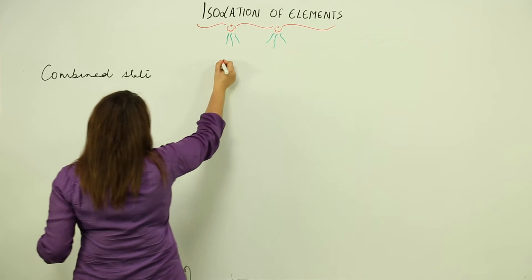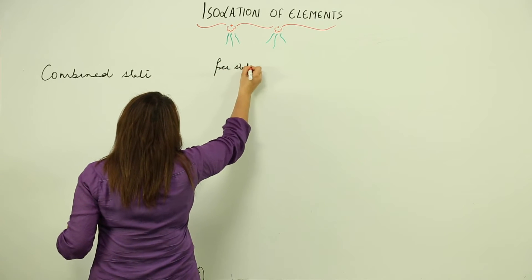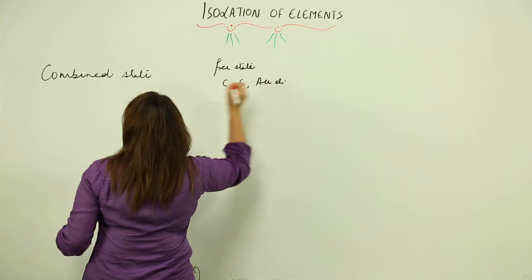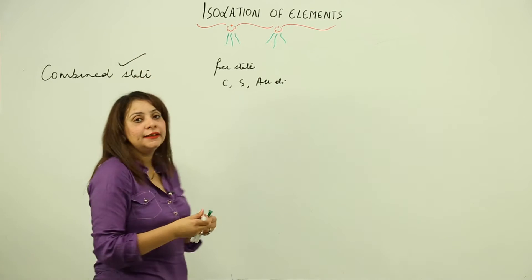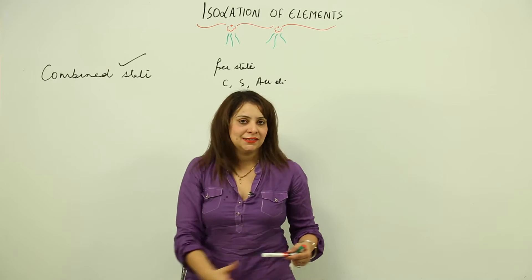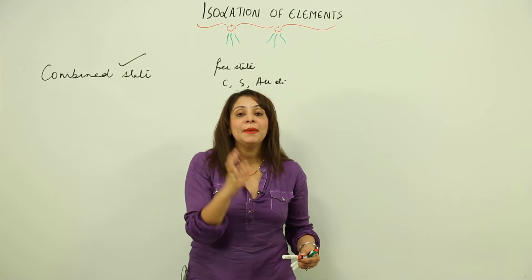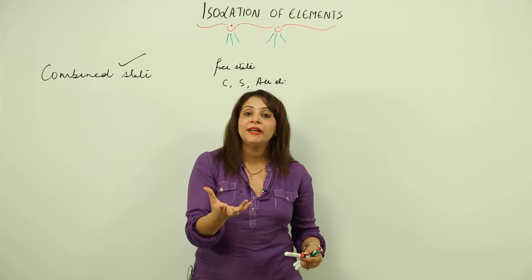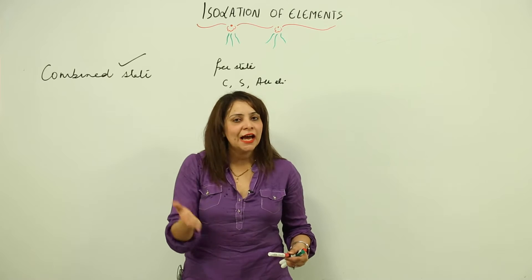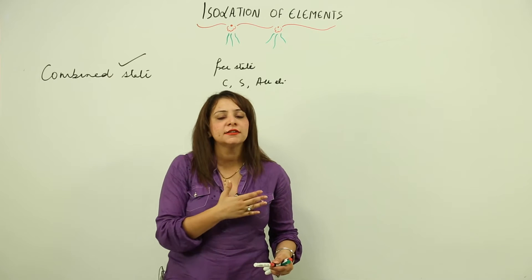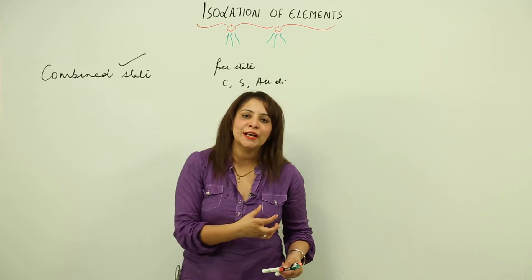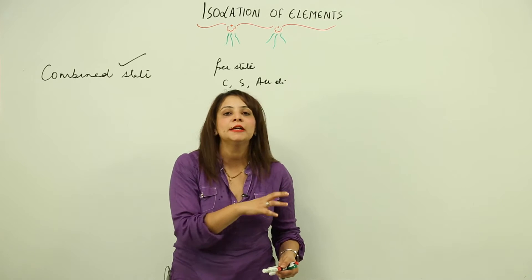Though we get some elements which occur in a free state — for example, carbon, sulfur, gold — most of the metals occurring in nature or in the earth crust occur in a combined state. And that combined form not only carries the metal; it also carries impurities like sand, plants, microorganisms, and clay. There are many substances present along with the metal.